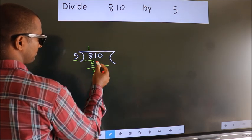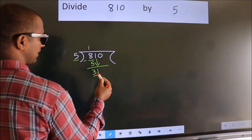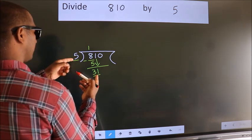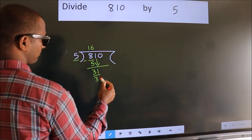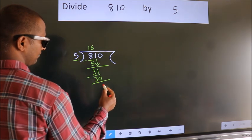After this, bring down the beside number. So, 1 down, giving us 31. A number close to 31 in the 5 table is 5 times 6, which is 30. Now, we subtract. We get 1.